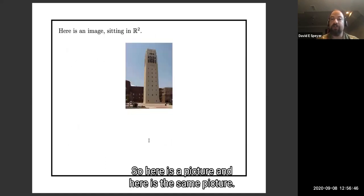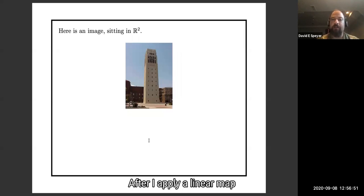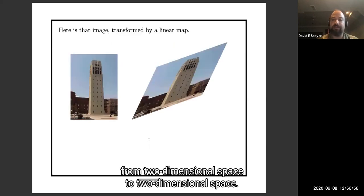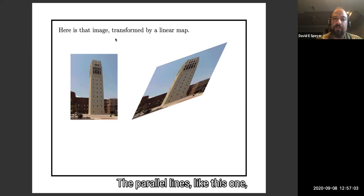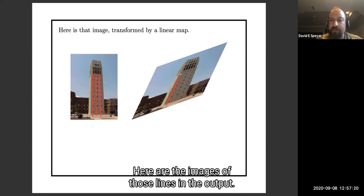Here is a picture, and here is the same picture after I apply a linear map from two-dimensional space to two-dimensional space. You can see a few things geometrically in this example. The parallel lines, like this one, this one, and this one, stay parallel in the output. Here are the images of those lines in the output.